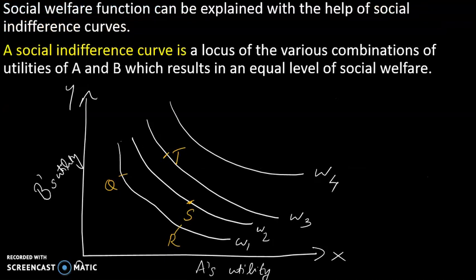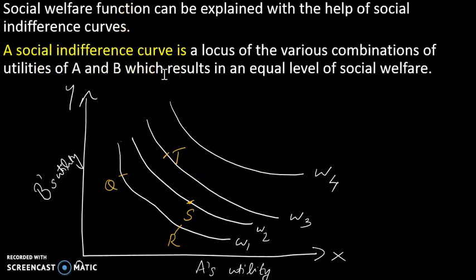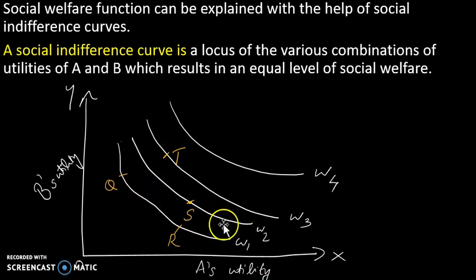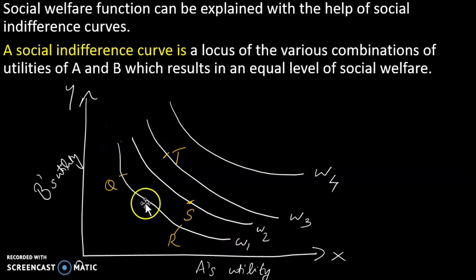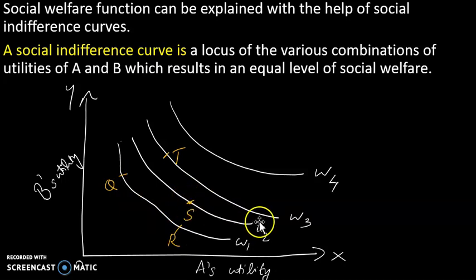Now for the diagrammatic explanation of the social welfare function. The diagram shows social indifference curves. On the Y-axis we have individual B's utility and on the X-axis individual A's utility. A higher social indifference curve represents higher satisfaction and higher social welfare.